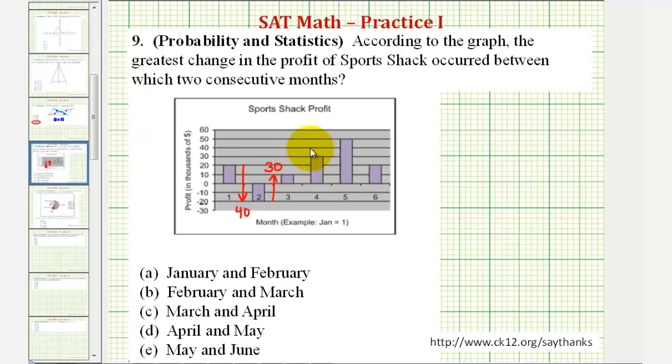From the third month to the fourth month, profits went from ten thousand to thirty thousand, an increase of twenty thousand.